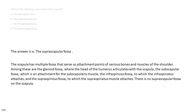The answer is D, the suprascapular fossa. The scapula has multiple fossae that serve as attachment points of various bones and muscles of the shoulder. Among these are the glenoid fossa, where the head of the humerus articulates with the scapula; the subscapular fossa, which is an attachment for the subscapularis muscle; the infraspinous fossa, to which the infraspinatus attaches; and the supraspinous fossa, to which the supraspinatus muscle attaches. There is no suprascapular fossa on the scapula.